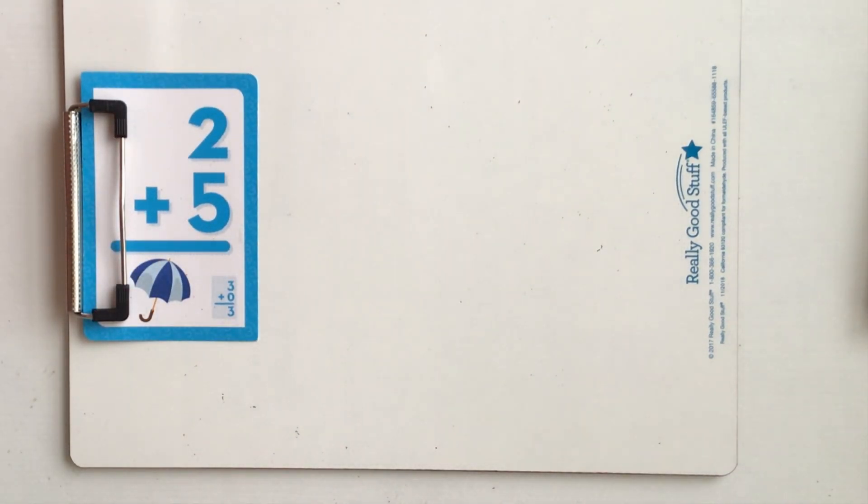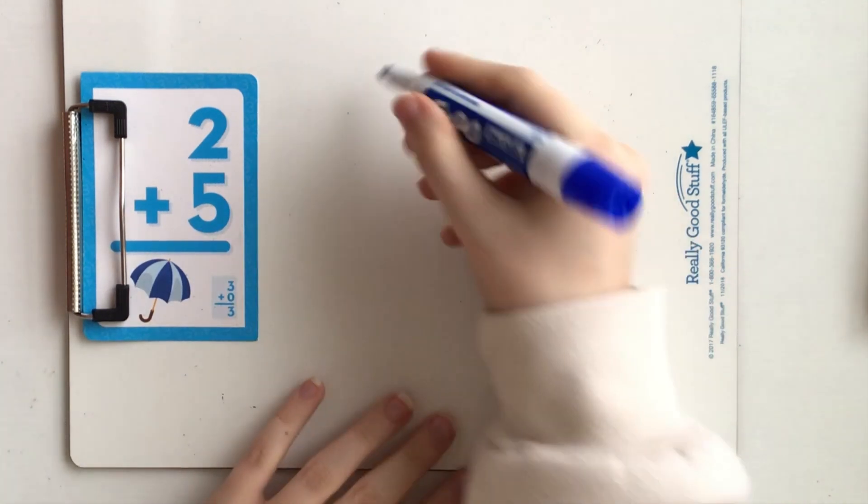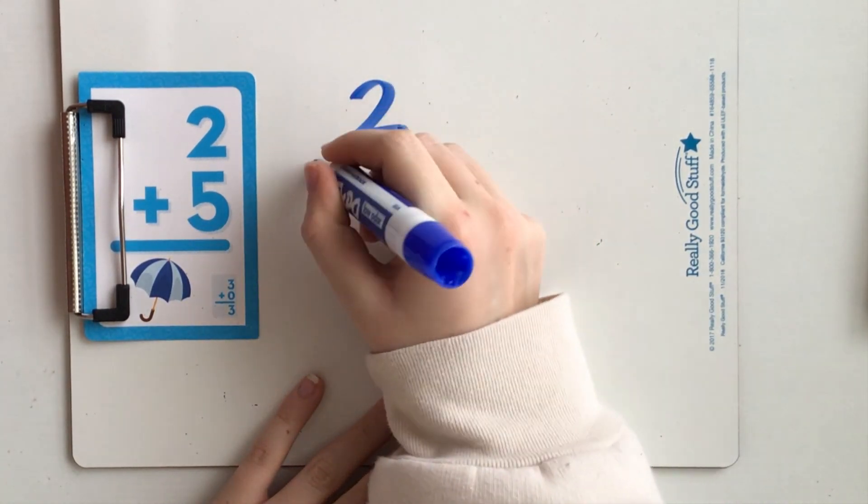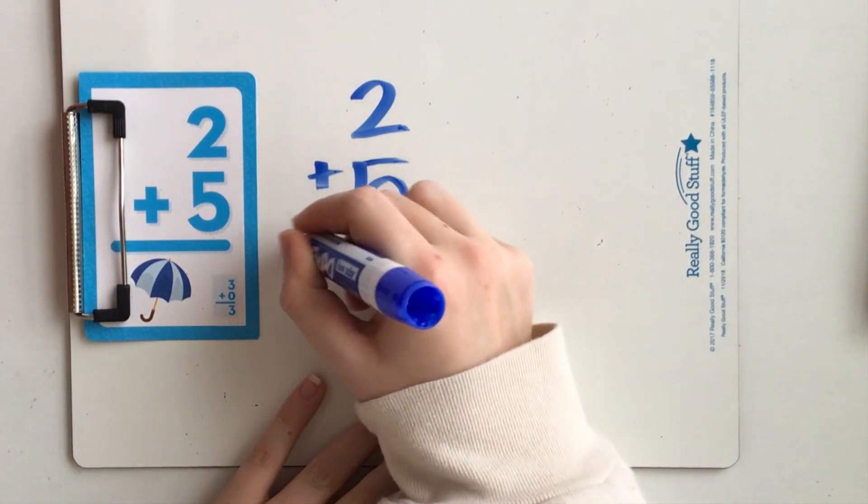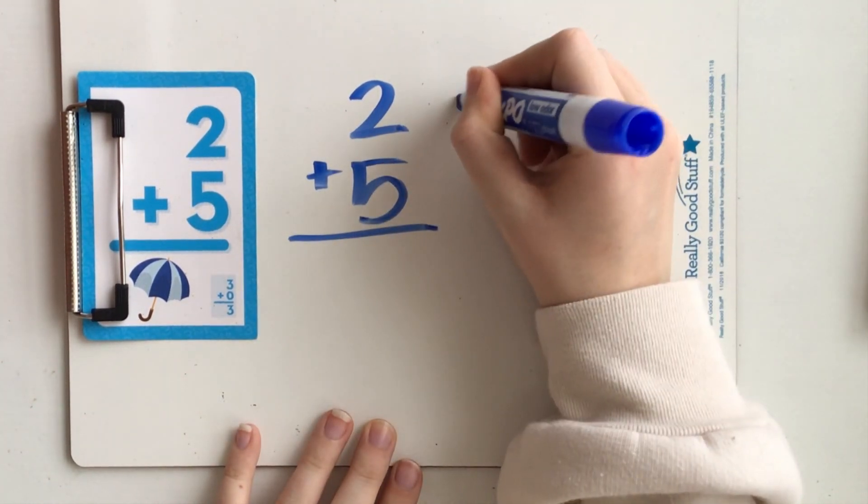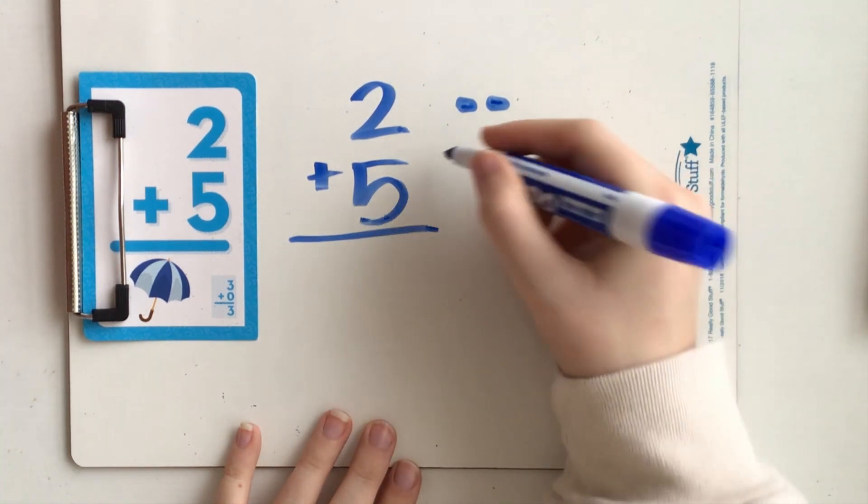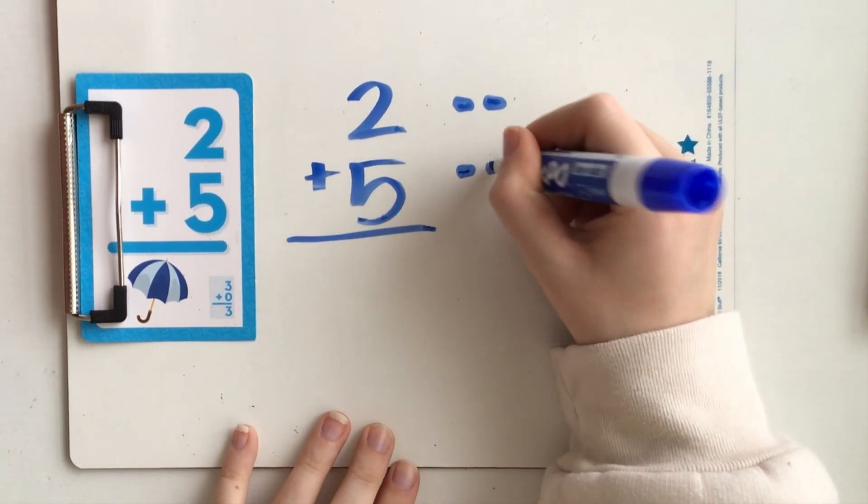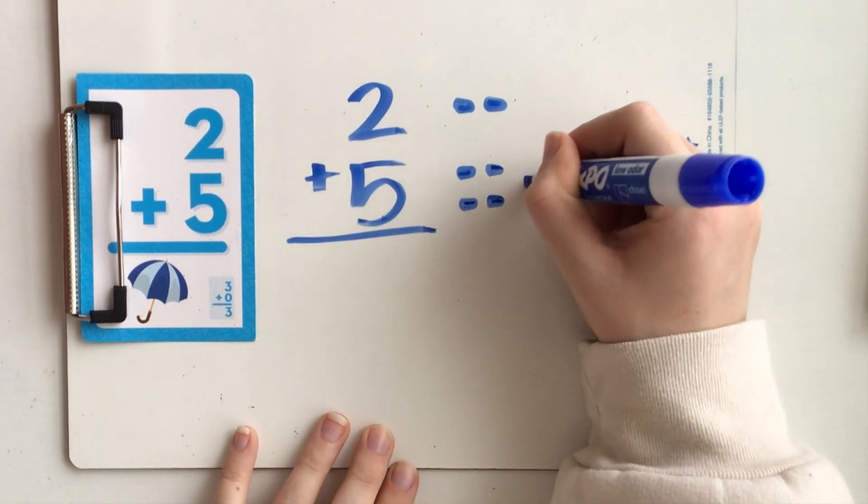The last problem is two plus five. Two plus five equals. I'm going to write my two dots here. One, two, and five dots on this side. One, two, three, four, five.